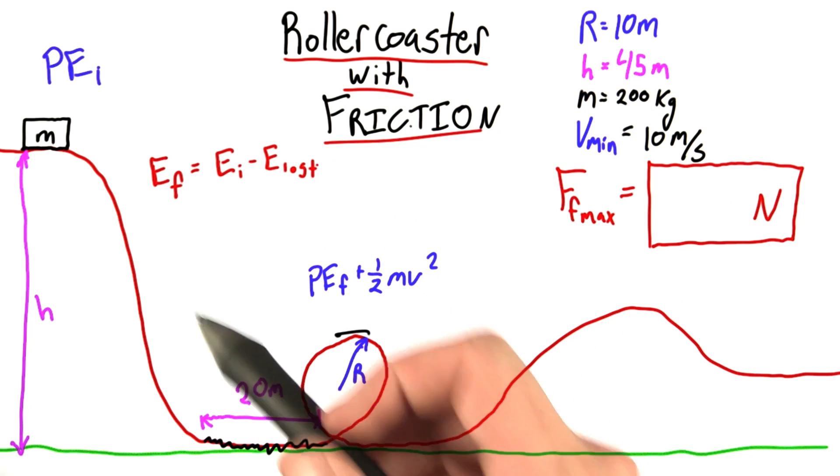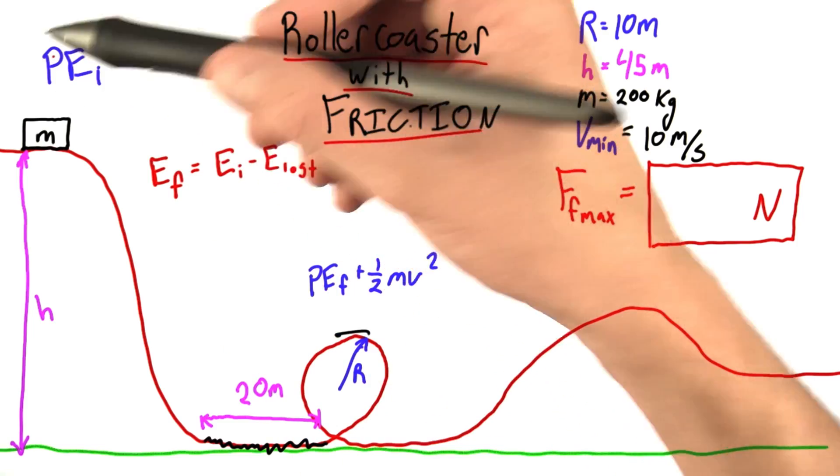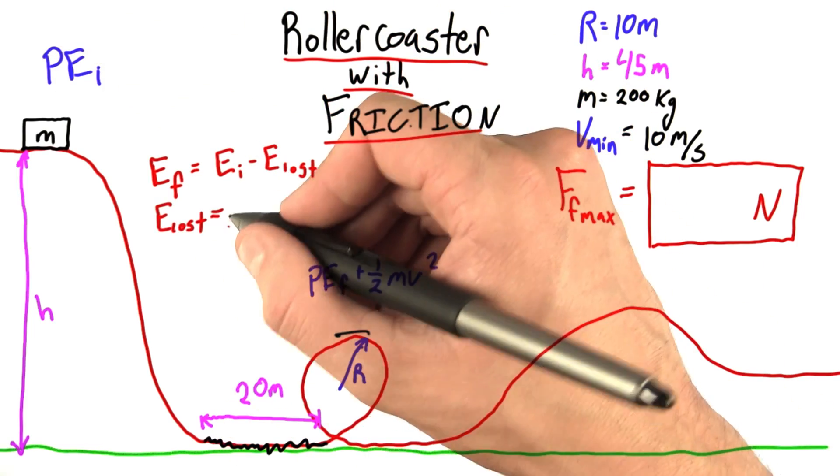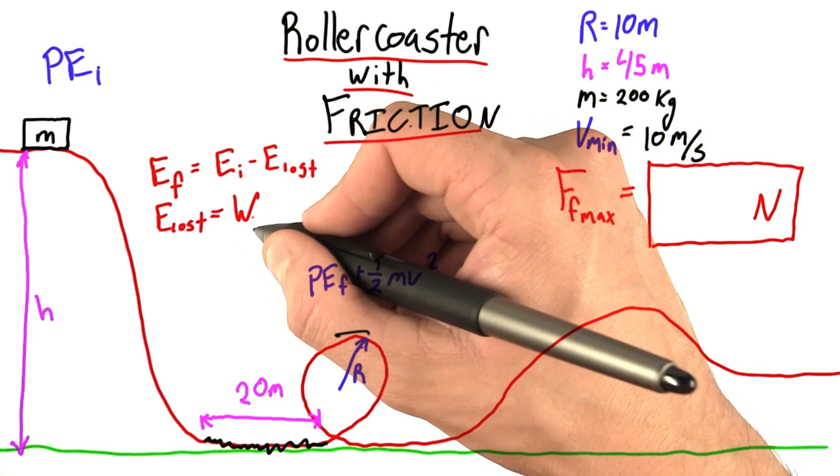So if I think about this in terms of energy, the final energy will just be whatever my initial energy is minus how much I lose here. The amount of energy I lose, well, that will just be the work done by friction.